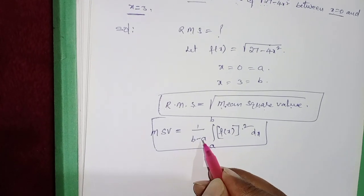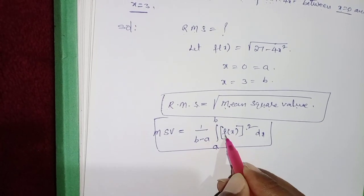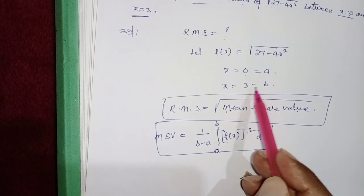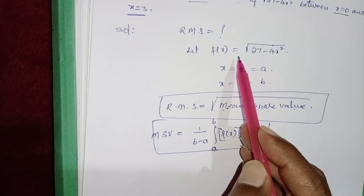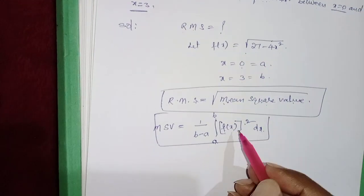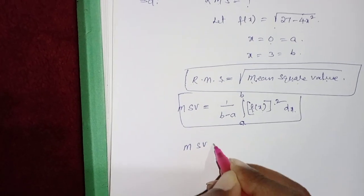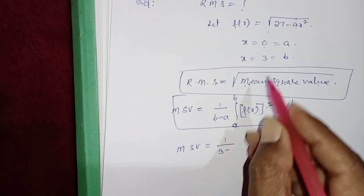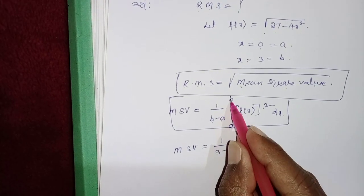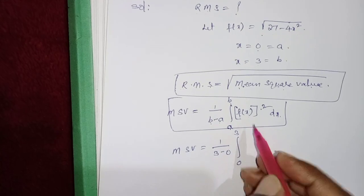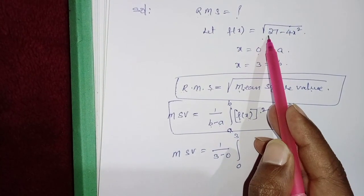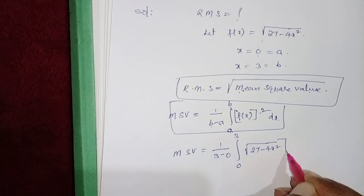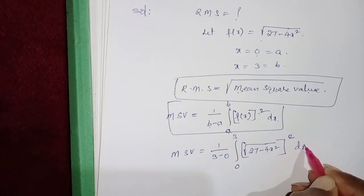Here b = 3 and a = 0. Substituting f(x) = √(27 - 4x²) into the formula, f(x) whole squared means [√(27 - 4x²)]². The square root gets cancelled when squared, so we are left with just (27 - 4x²) inside the integral.